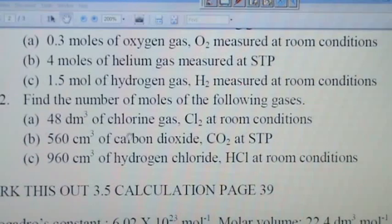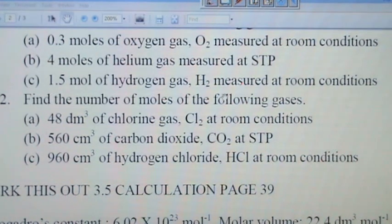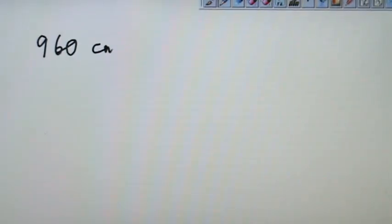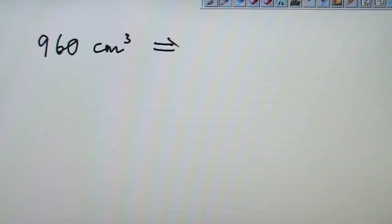How about C? What they are asking in C. Let's check it out. C. 960 cm³ of hydrogen chloride at room condition. Again, convert it to dm³. So 960 cm³. Once you are familiar with it, you can just write 0.96 dm³.